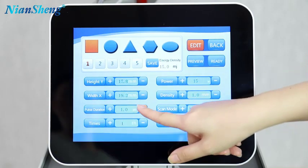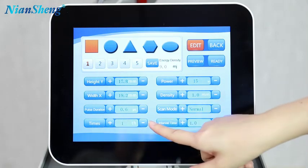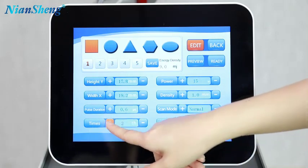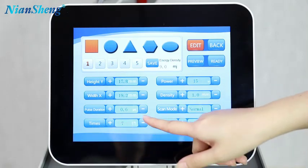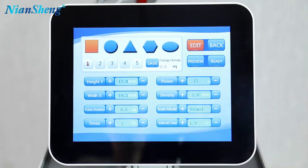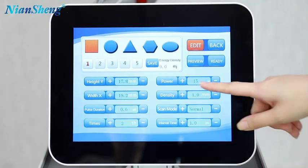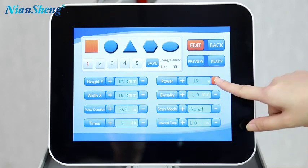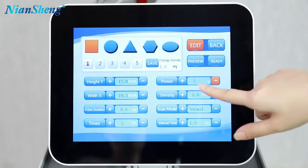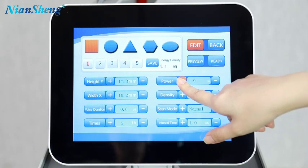The second one is the pulse function and the pulse duration here. Times. This time means the repeated times on the same, the repeated times during working. And then we need to adjust the power. The maximum power is 60 watts.